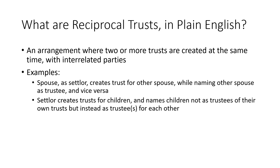Another situation that can arise is where a settlor creates gifting trusts — irrevocable trusts — for children, and names children not necessarily as trustees of their own trust, but as cross-trustees for each other. So if you had two siblings, one sibling might be the trustee of the other's trust, and vice versa. These are very important right now because, with the high gifting exemption, a lot of people are going to be trying to make gifts to trusts in a hurry before the election, to take advantage of the higher exemption before it goes away. But there is some caution to be taken with simultaneous gifts and simultaneously created trusts.